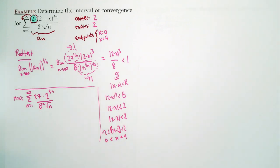Now we need to do our endpoints. At x equals 0, we plug in to get the sum n equals 1 to infinity of 27 times 2^{3n} divided by (8^n times square root of n). If you've done your job right with the radius of convergence, this should be a borderline case.